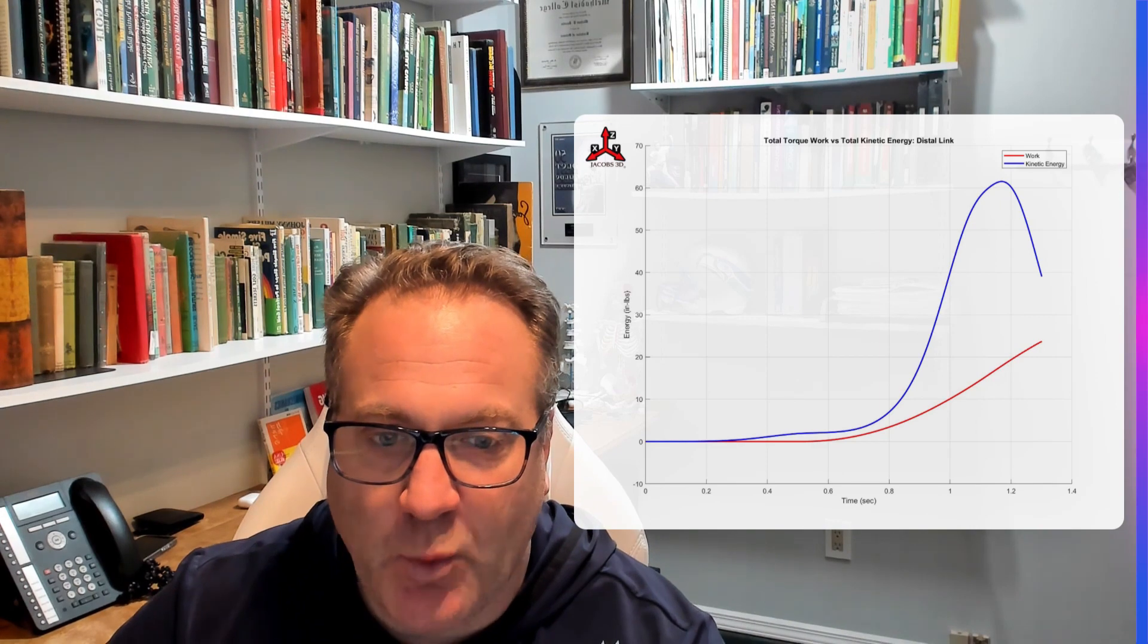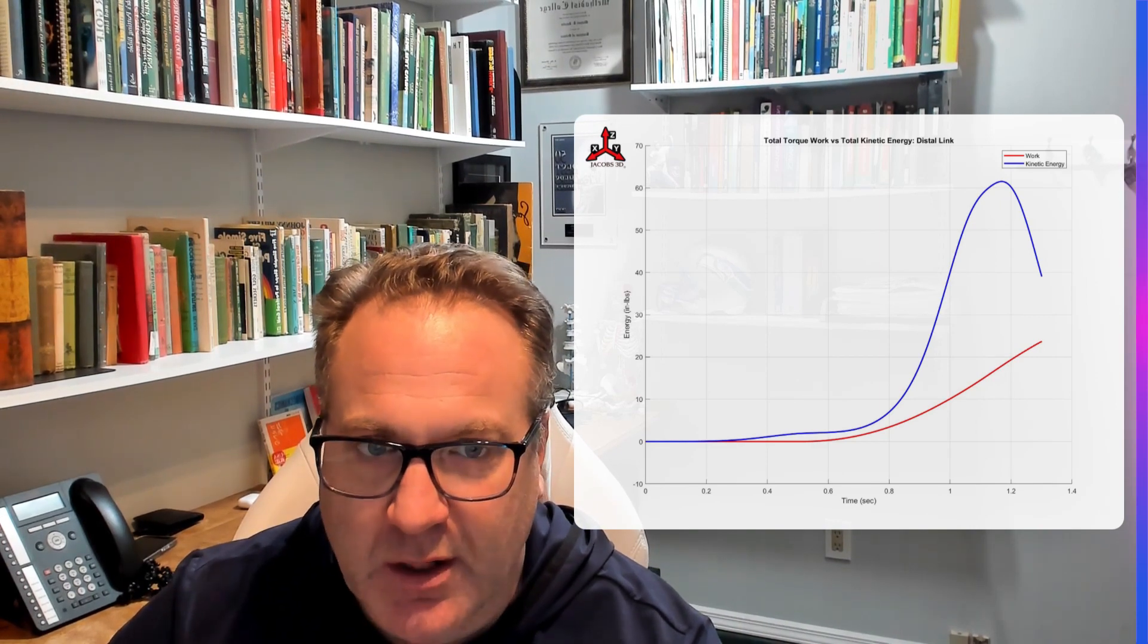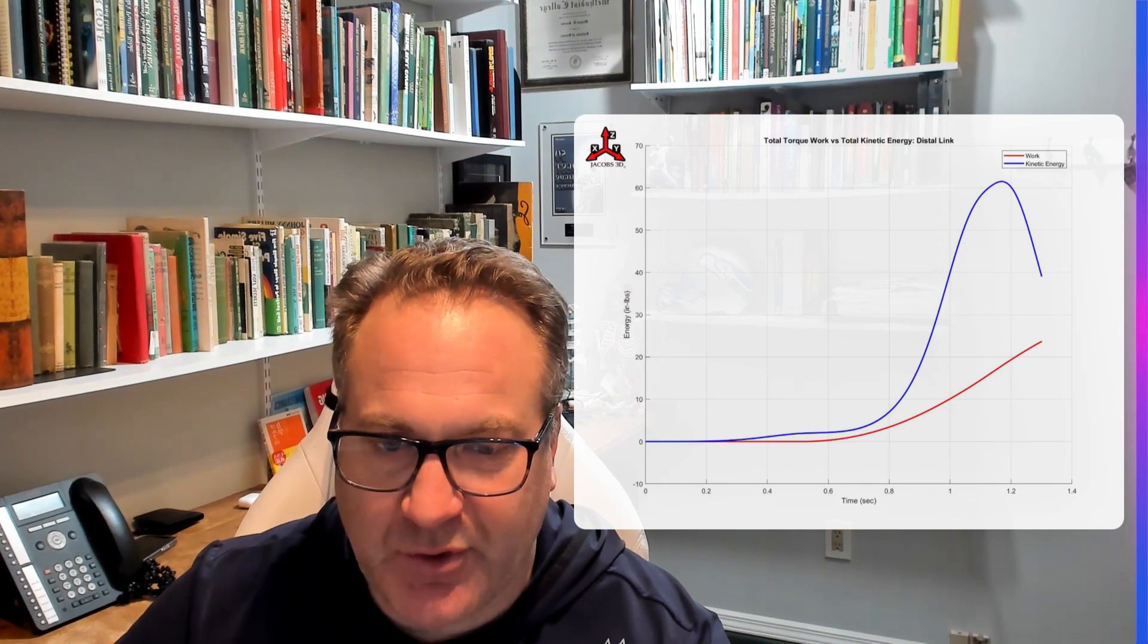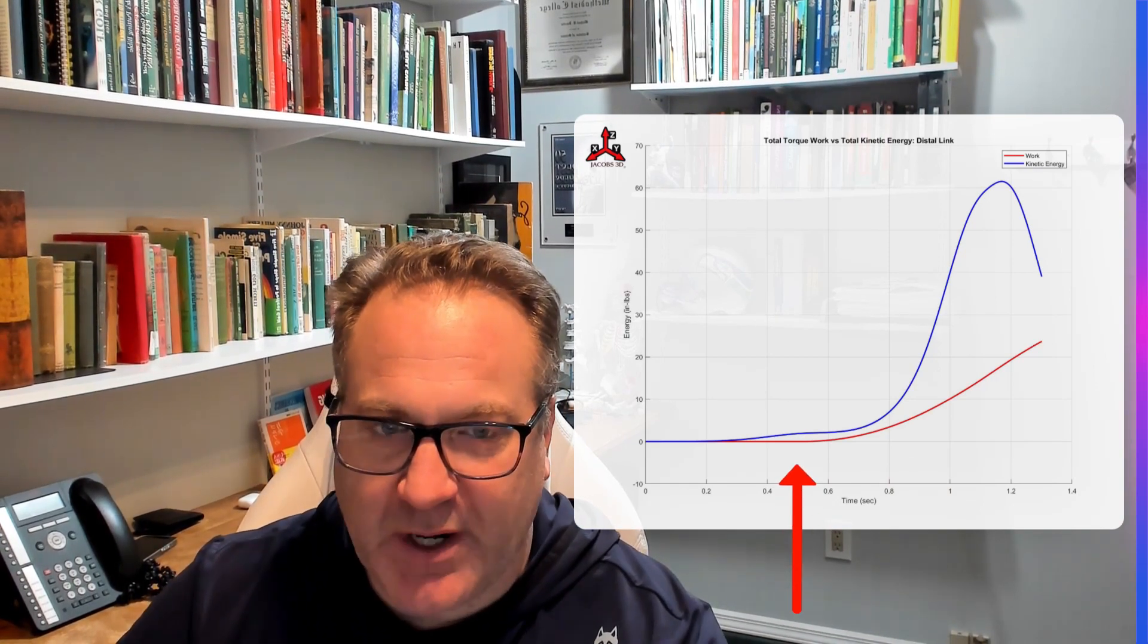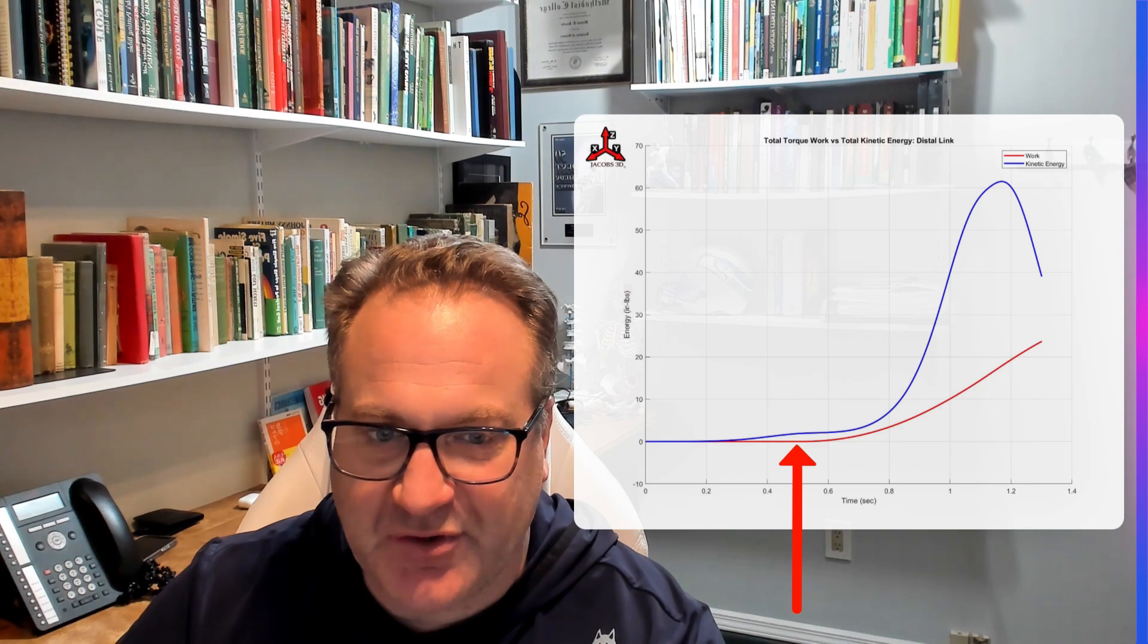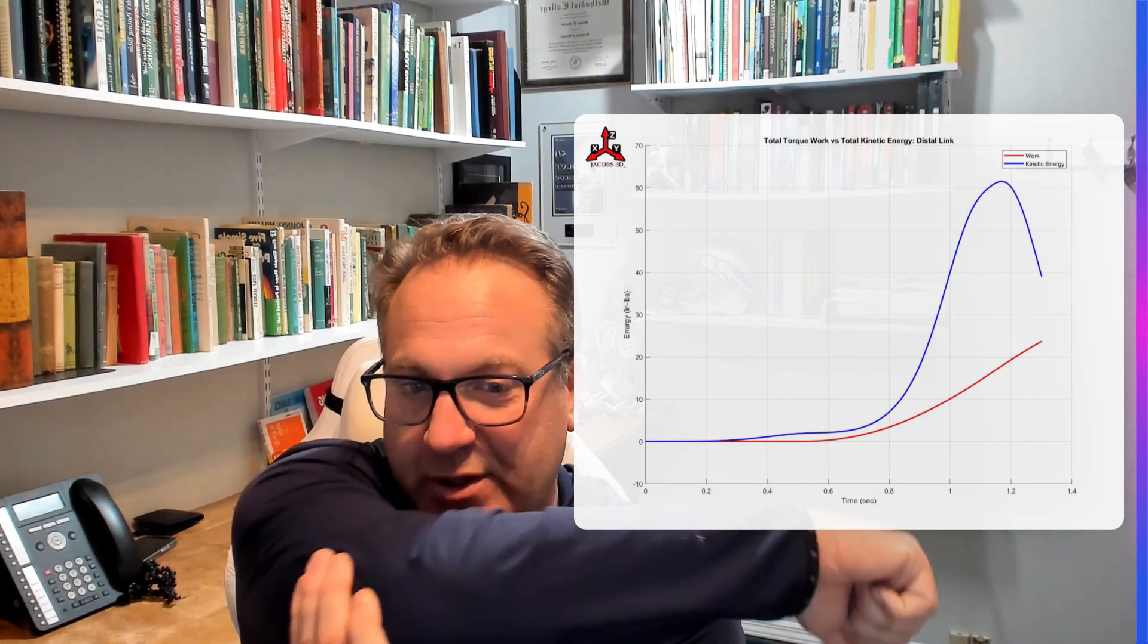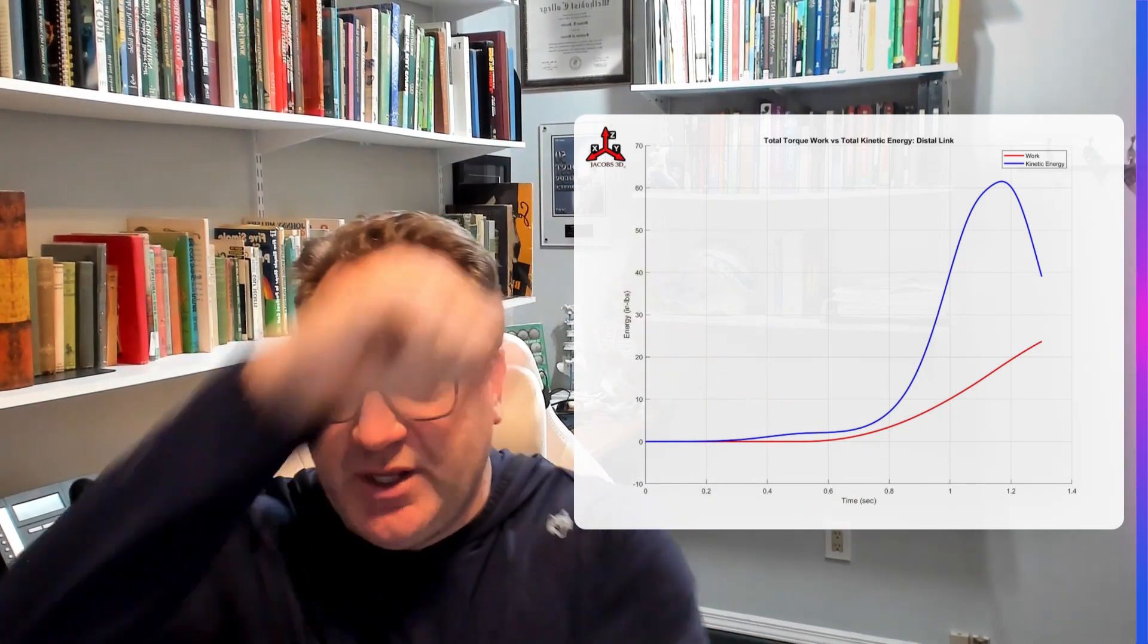And what you'll notice is that we don't start torque in the distal golf club until 0.5. So there's no angular work up until this point right here. Now we notice that there is kinetic energy in the club earlier, because that's from what was being done by the proximal link earlier.